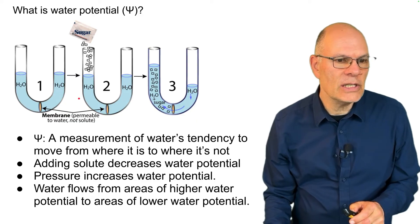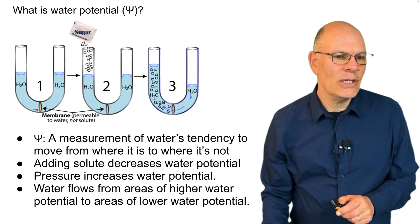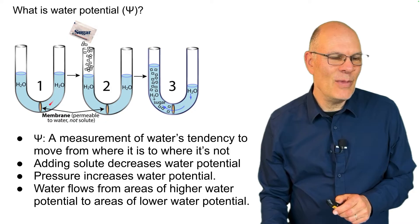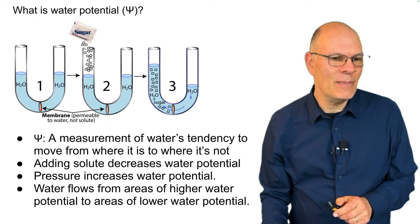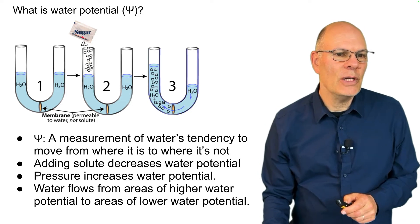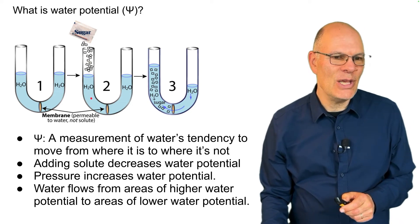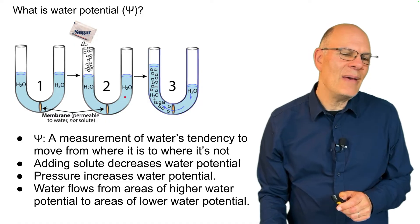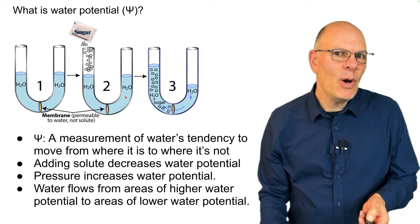If you look at this device over here, it's called a U-tube. These two parts are separated by a membrane that's permeable to water but not to the solute. Here we are adding a solute to this side of the U-tube. That makes this side hypotonic.